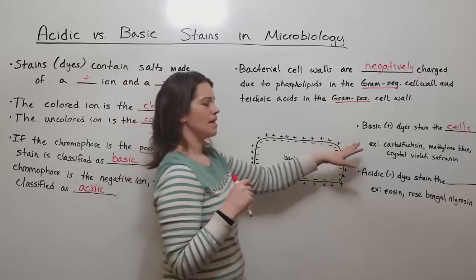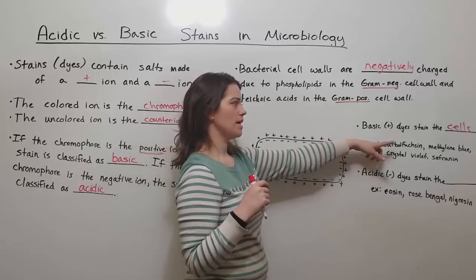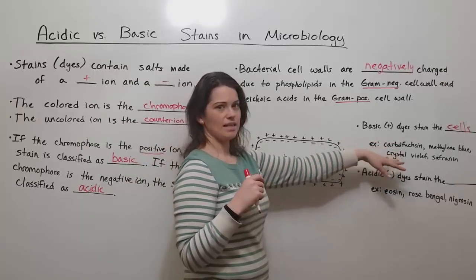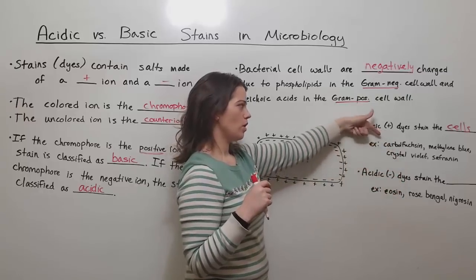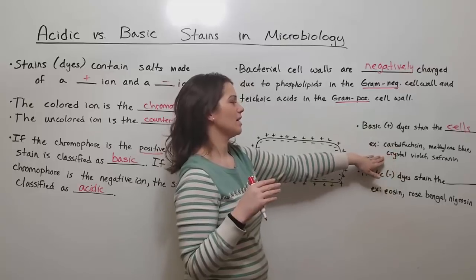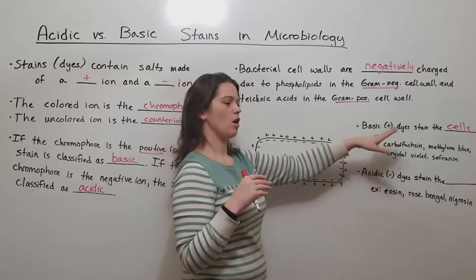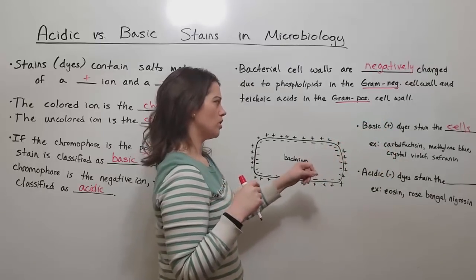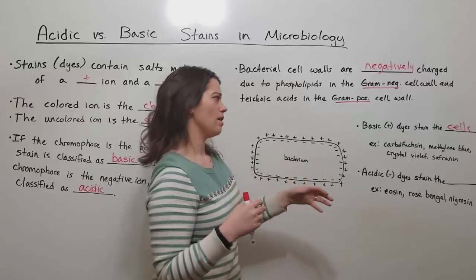Some common basic dyes that you've heard of are things like carbolfuchsin, methylene blue, crystal violet, and safranin. The first two are common in the acid-fast stain. The second two, crystal violet and safranin, are common in the gram stain, which are very common microbiology stains.